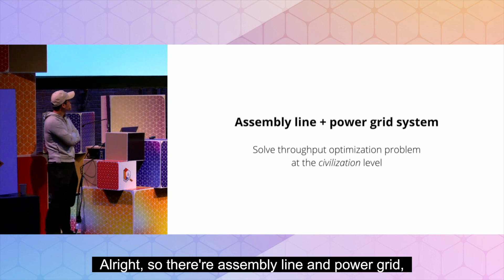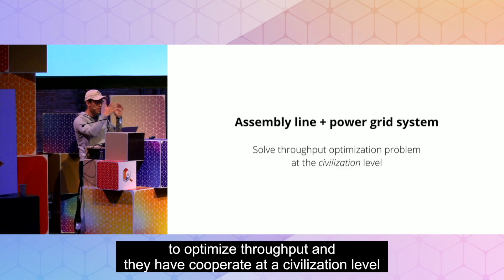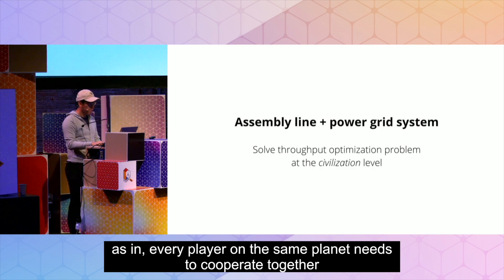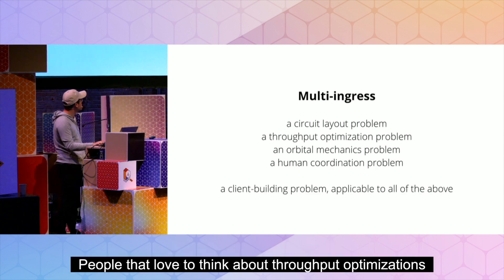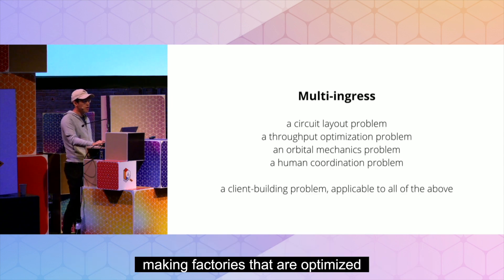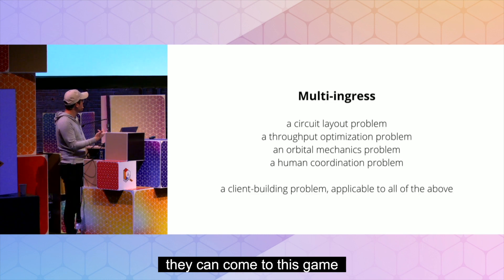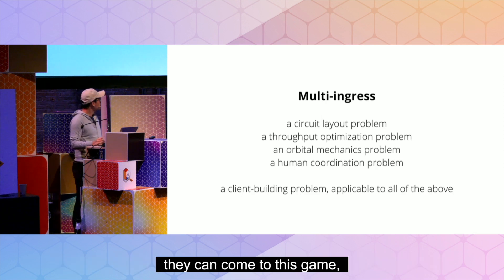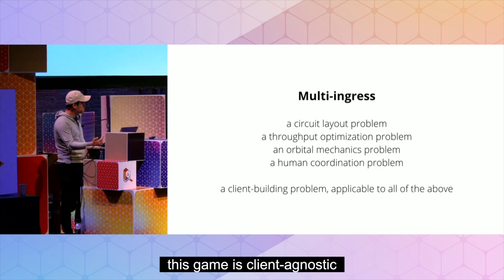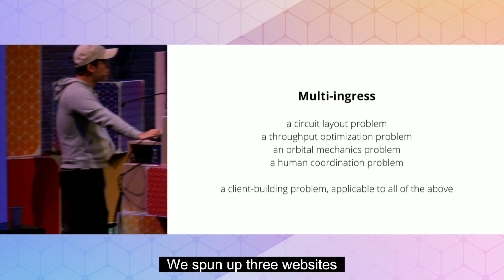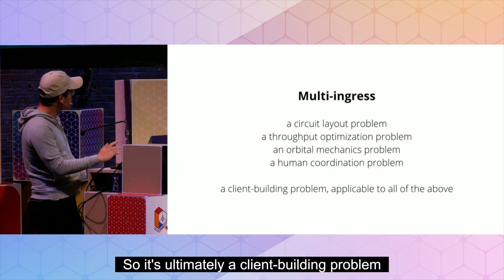Another feature is the assembly line and power grid: players have to build together to optimize throughput and cooperate on a civilization level, since every player is on the same planet. Multi-ingress is satisfying in this game — people who love circuit layout problems, throughput optimization, making optimized factories, orbital mechanics, NASA and aerospace fans, and people who love politics and coordination problems can all come to this game, since players must work together and someone needs to mediate the community. Finally, just like Dark Forest, this game is client-agnostic — everyone can build clients. We spun up three websites to look at and interact with the same game contract, but anyone can build their own client — web-based, terminal-based, whatever. It's ultimately a client-building problem: determine how you want to interact with the contract.